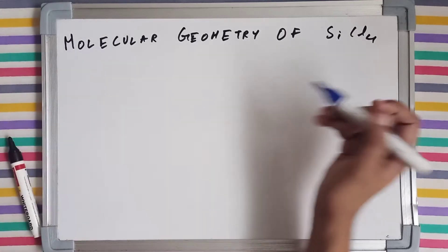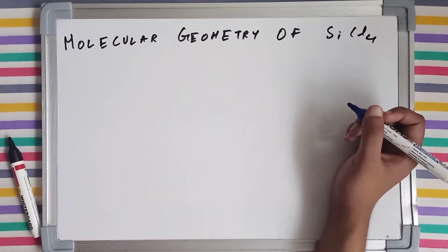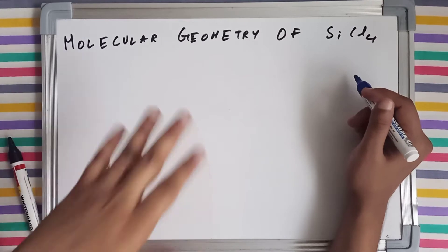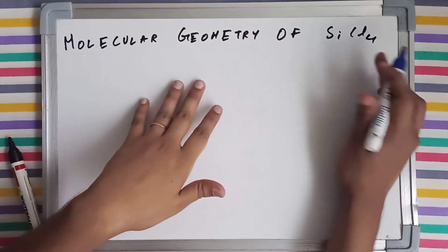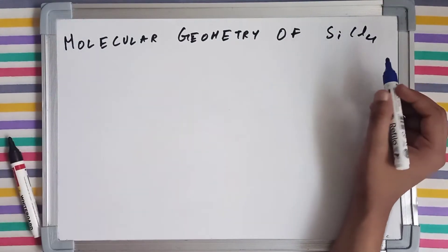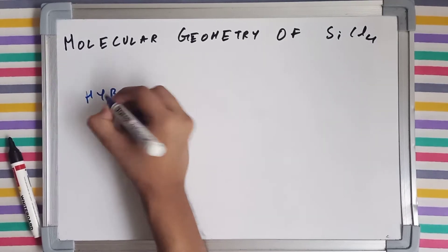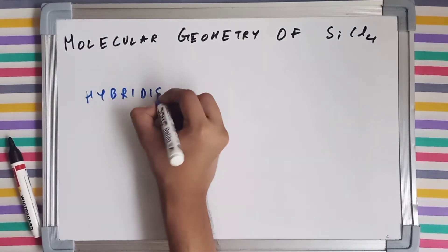For attaining our answer, we have to calculate the hybridization of this particular molecule to draw the molecular geometry of SiCl4. So in order to do that, we are going to calculate the hybridization of this molecule.